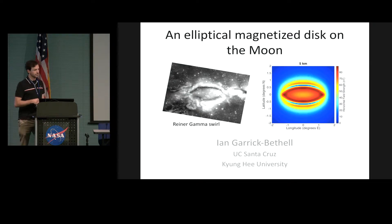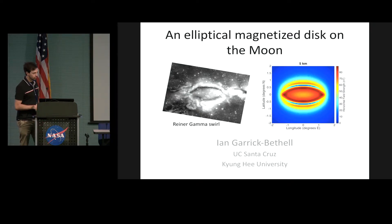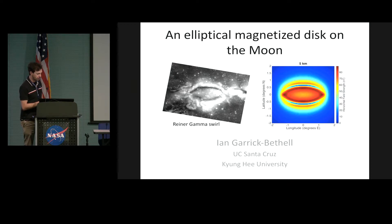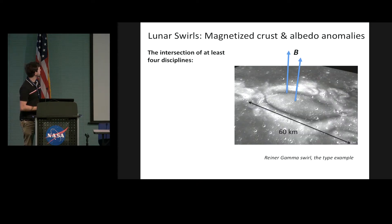I'm going to talk about a well-known magnetic anomaly on the moon, Reiner Gamma. I'm going to show you a model to explain the optical features you see on the soil, as well as some of the magnetic field structures we observe from high above it. Some preliminaries.